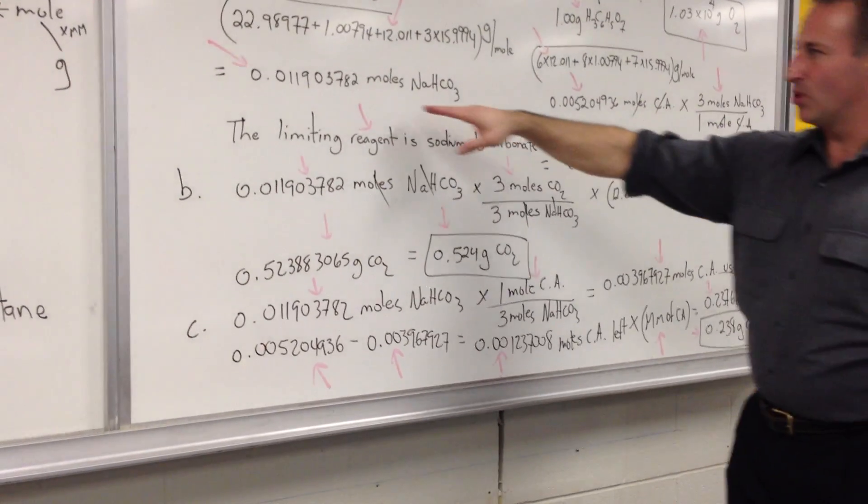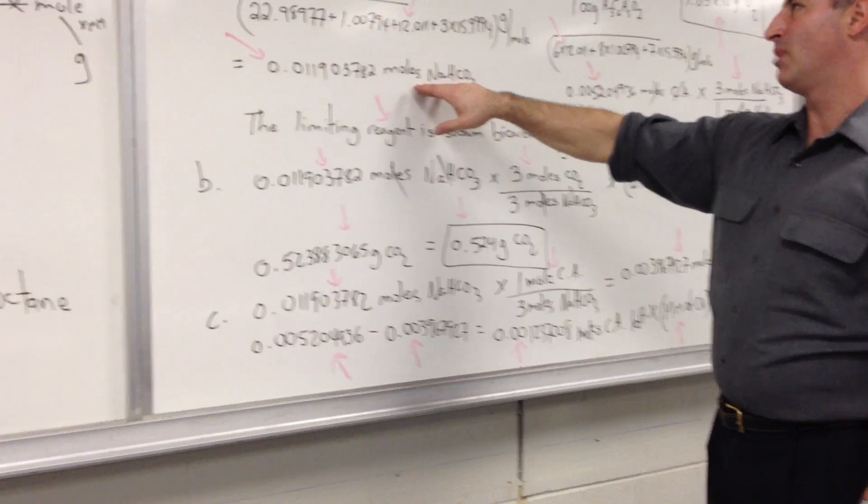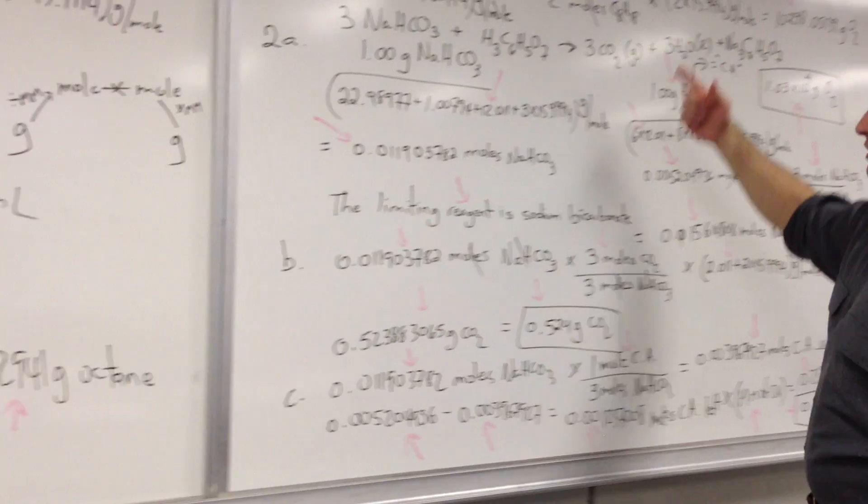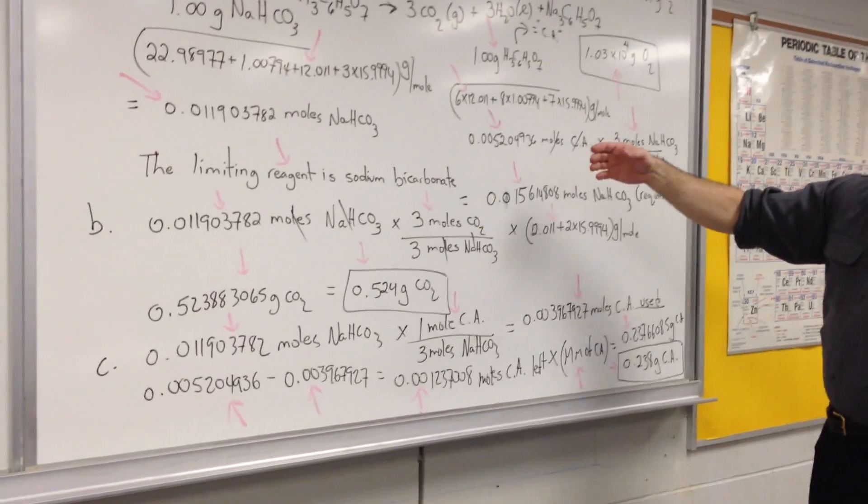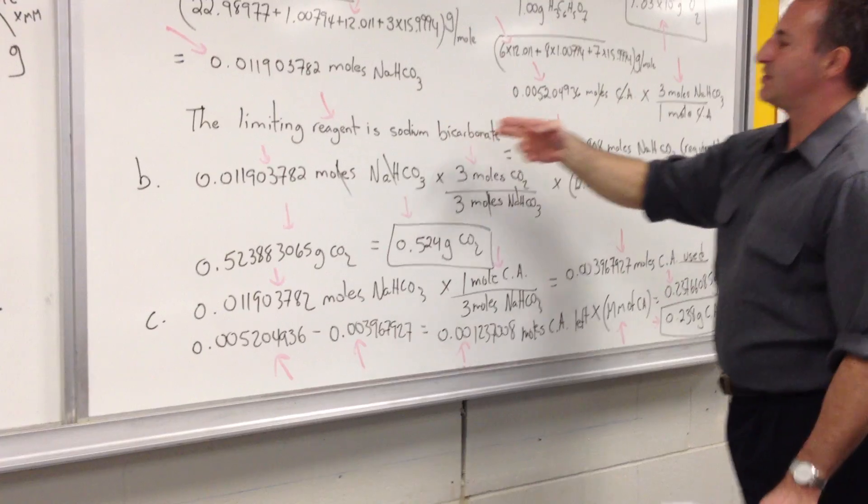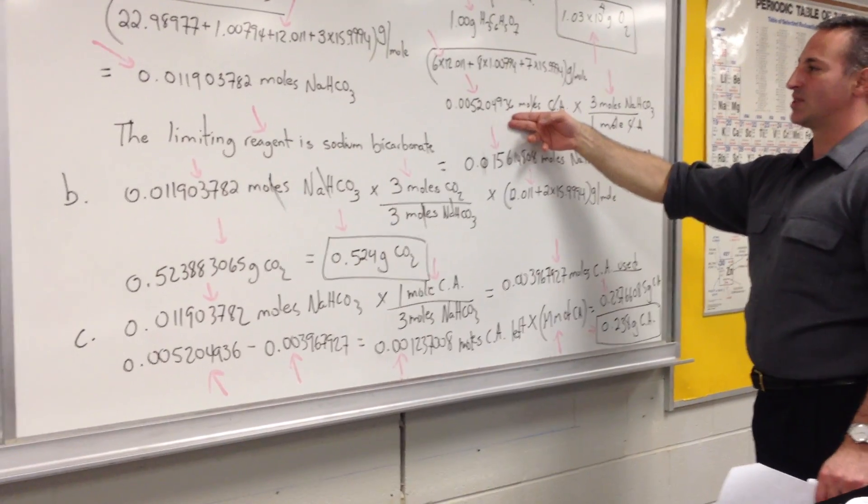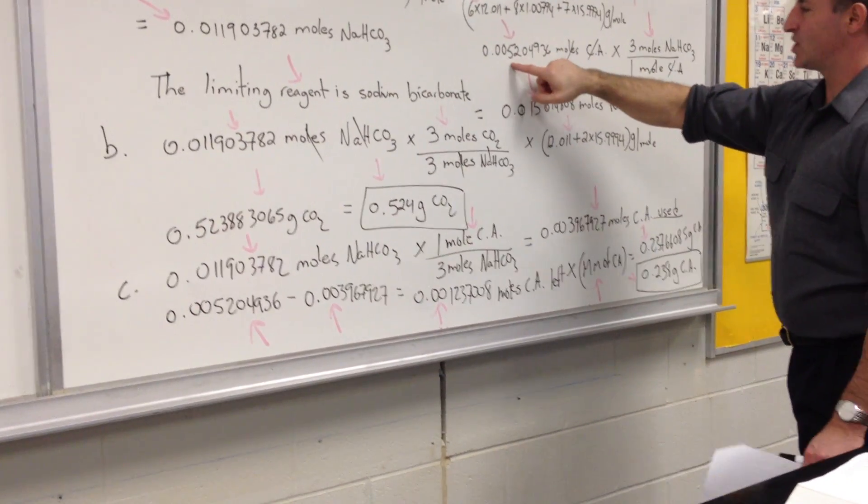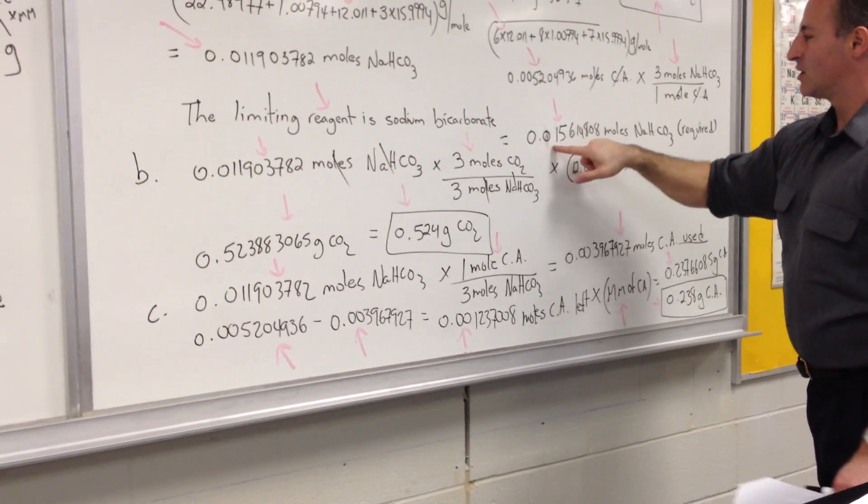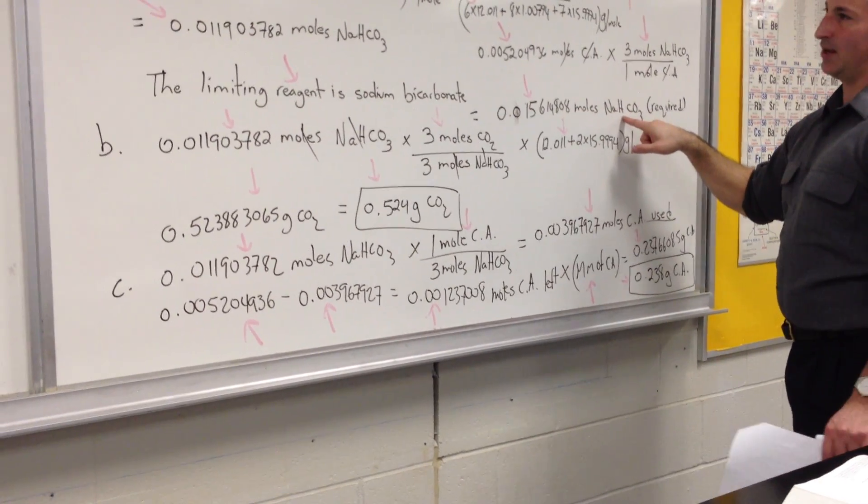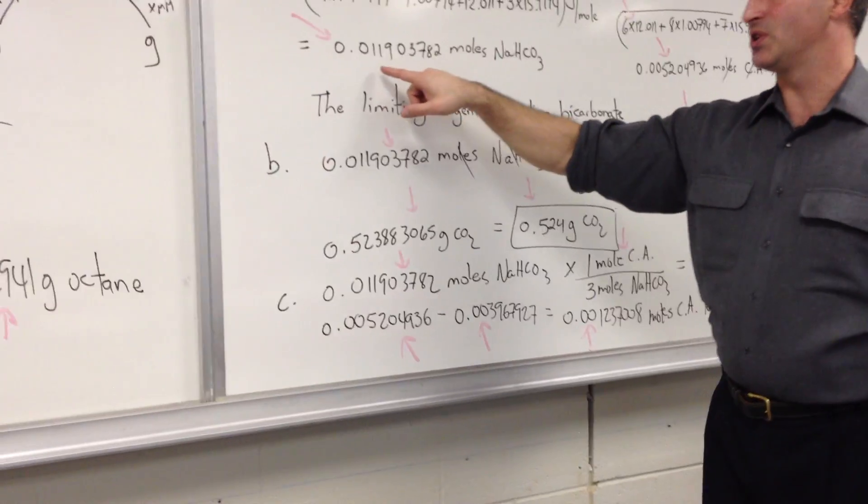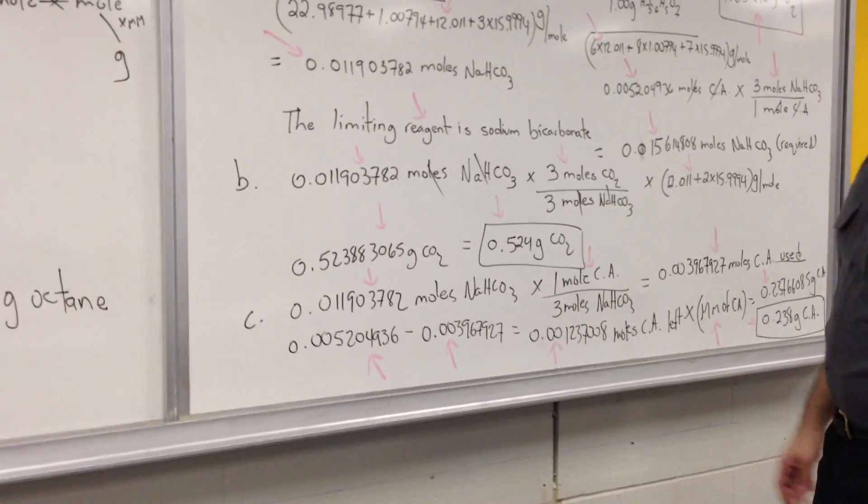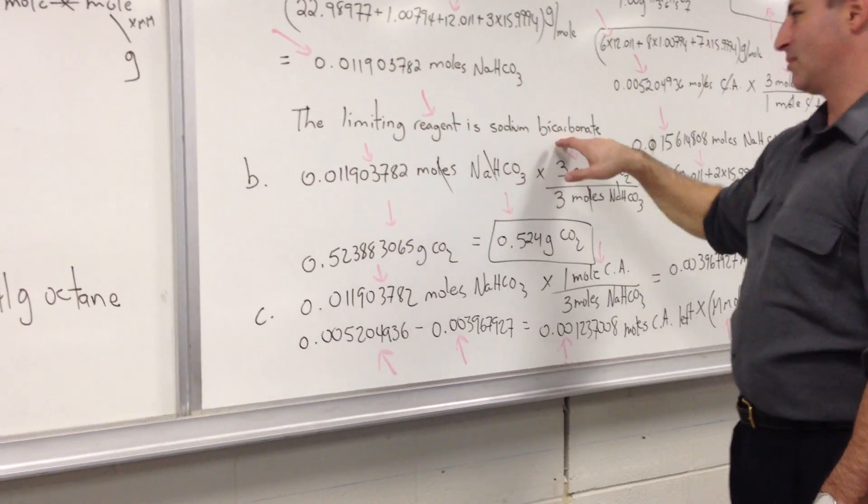It appears as though we have more than enough moles of sodium bicarb, but the stoichiometry is three to one. So we have to do an additional calculation to find out how much bicarbonate is necessary to react with this amount of citric acid. So the stoichiometry being three to one forces us to multiply this number by three. So we need 0.015 moles of sodium bicarbonate. But we only have 0.019, therefore we realize that sodium bicarbonate is the limiting reagent. So that's what I stated here, the limiting reagent is sodium bicarbonate.